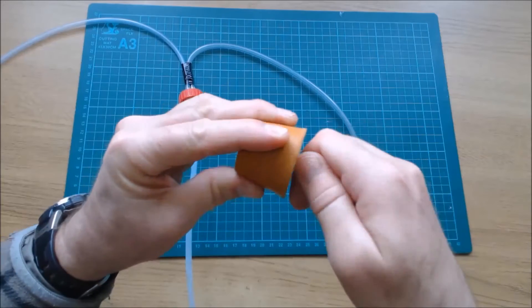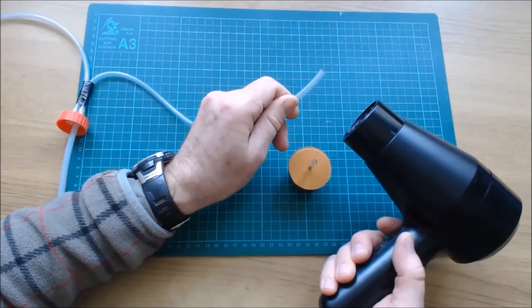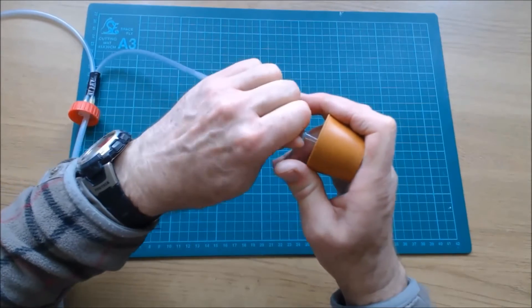The pipe connects to a glass soda straw which is pushed through the rubber stopper. Heat the pipe to make it more flexible and then push the pipe over the glass soda straw.